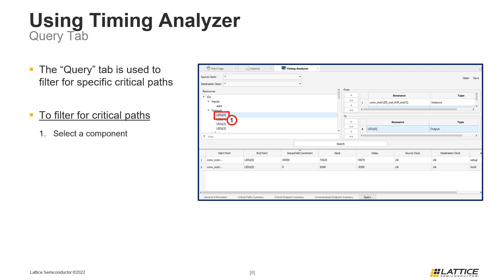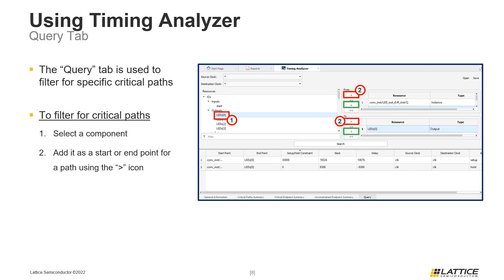With a component selected as either the start or end point for a search, click either of the greater-than icons in the To and From sections to add it to that section. If there are multiple components added in the To and From sections, the Query will search for paths with any combination of the To and From points. Components can be removed as a start or end point by selecting that component in either the To or From sections and then selecting the less-than icon. The double greater-than and less-than icons are used to add all paths or remove all paths from their respective sections.